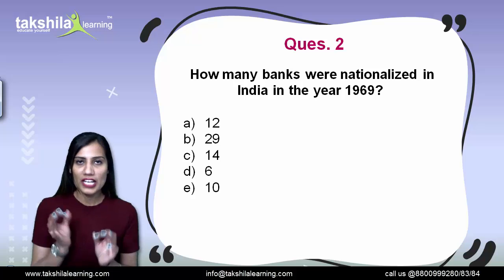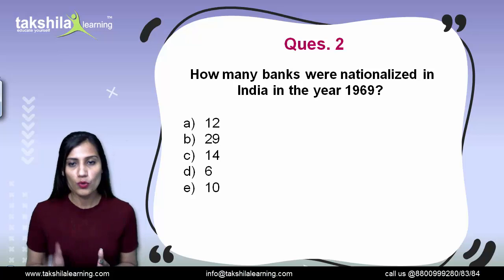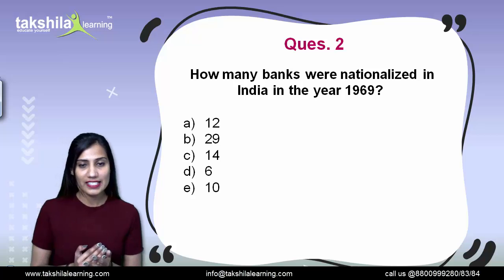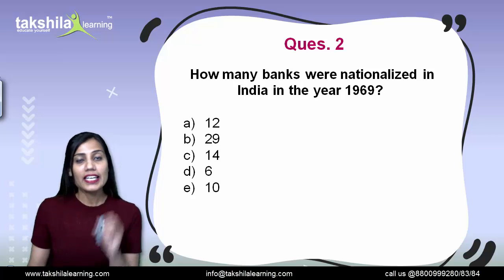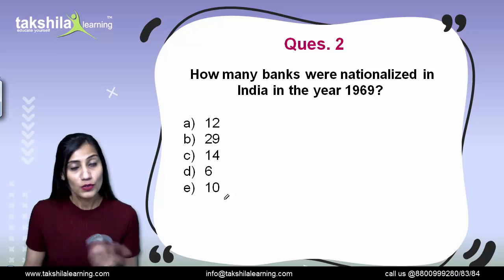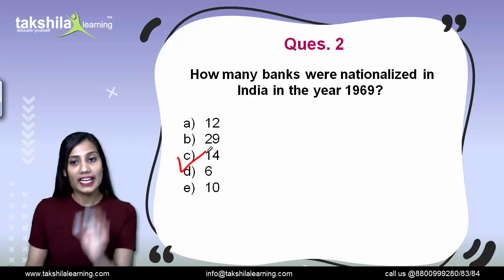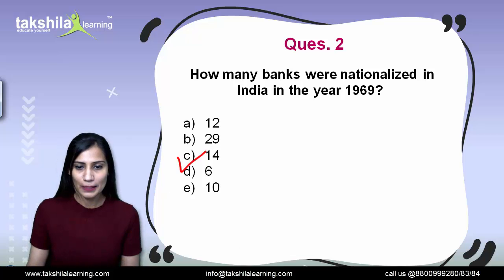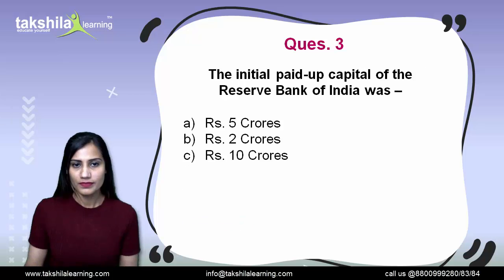Next question: how many banks were nationalized in India in the year 1969? In July 1969, this was the time when most banks were nationalized in India. The options are 12, 29, 14, 6, or 10. The correct answer is 14 — 14 banks were nationalized in 1969. Question number 2 correct answer is option C, that is 14.